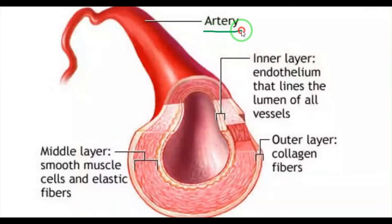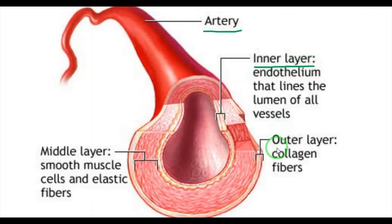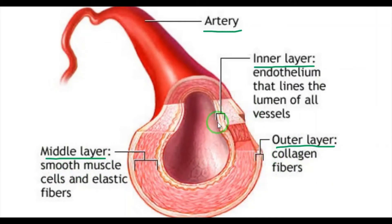First one is artery. This artery is a blood vessel that carries blood. Arteries are thick and elastic vessels. There are three layers present in the artery: inner layer, outer layer and middle layer. The inner layer is made up of endothelium, the outer layer is collagen fibers, and the middle layer is smooth muscle. The cavity inside is called the lumen. The outermost layer is very, very thick.